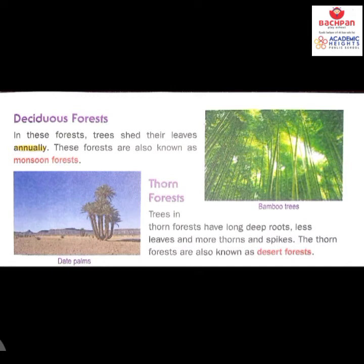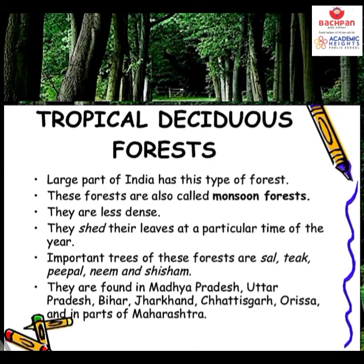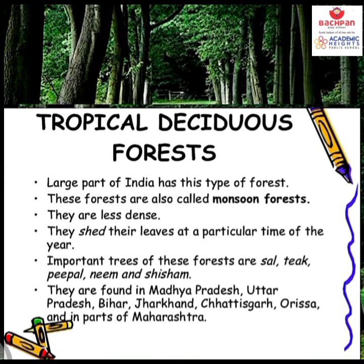The second type of forest is the deciduous forest. In these forests, the trees shed their leaves annually. These forests are also known as monsoon forests. A large part of India has this type of forest. They are less dense and shed their leaves at a particular time of year. The important trees of these forests are sal, teak, peepal, neem, and shisham. These types of trees are generally found in Madhya Pradesh, Uttar Pradesh, Bihar, Jharkhand, Chhattisgarh, Orissa, and some parts of Maharashtra — generally in central India.